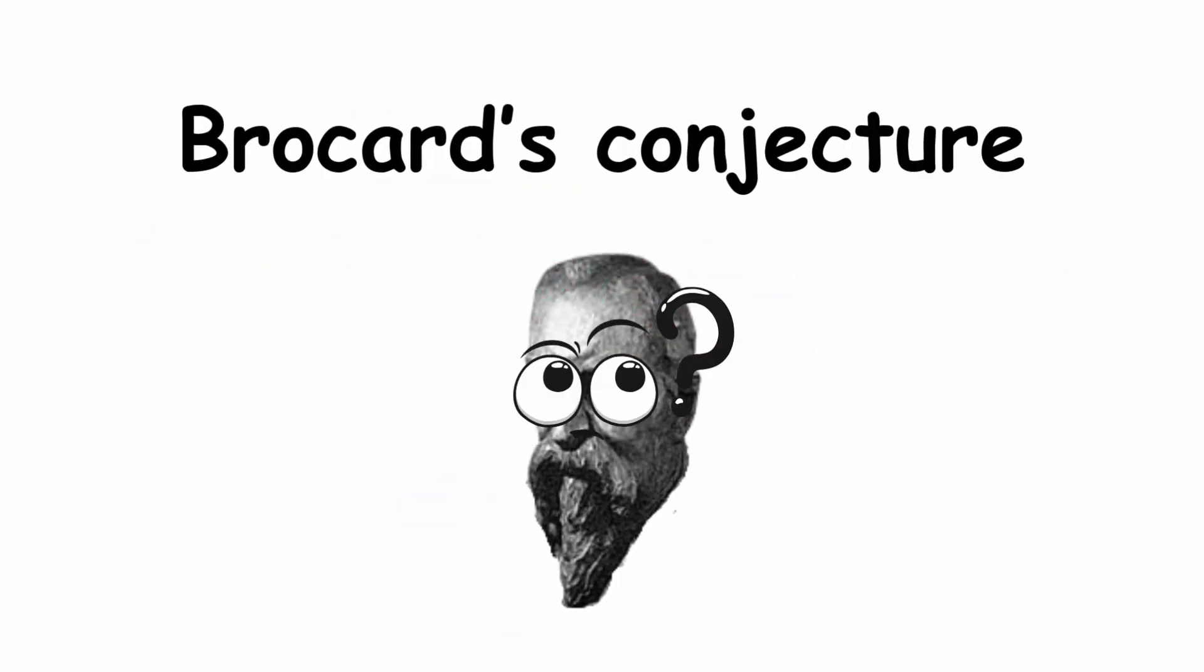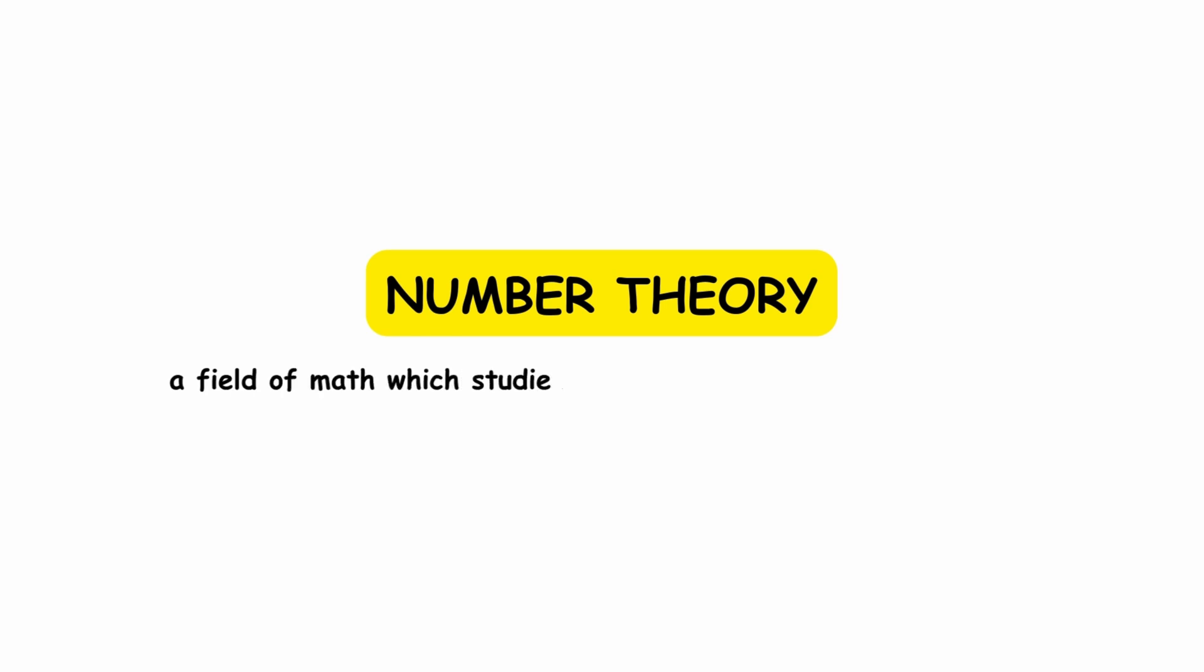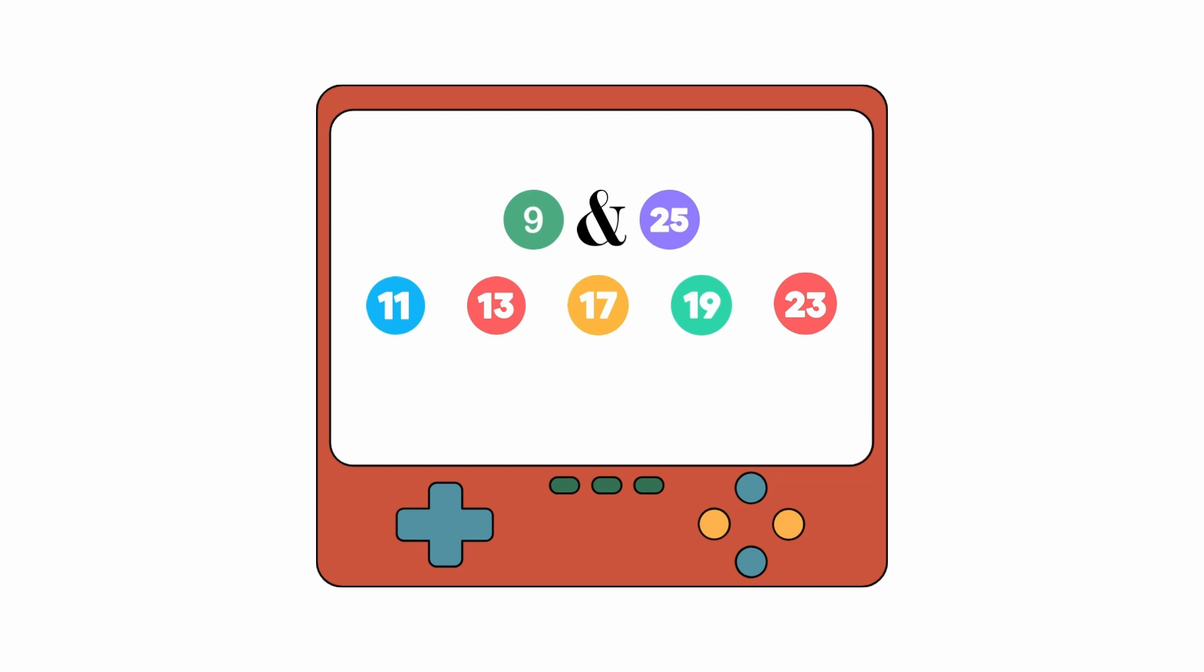This idea is known as Brocard's Conjecture, and it remains an unsolved problem in the field of number theory, a field of math which studies integers and arithmetic functions. Now, if you do allow the game to be played with the number 2, then you will get a result of 2.